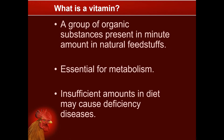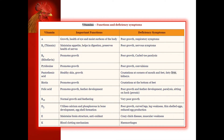What is a vitamin? It is a group of organic substances present in minute amounts in natural feedstuffs. It is essential for metabolism, and an insufficient amount in the diet may cause deficiency diseases in poultry. The table shows the function of different vitamins and their deficiency symptoms. Take a minute or two to familiarize the important details on this table.